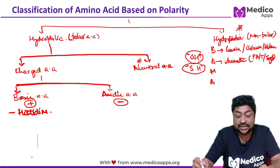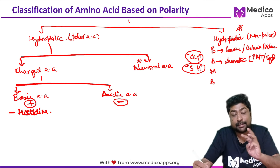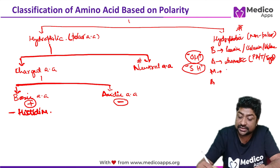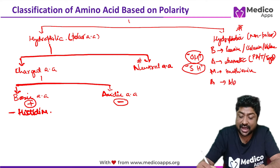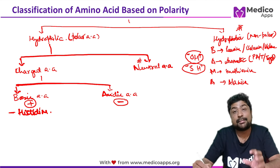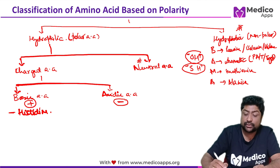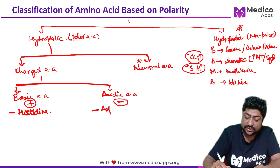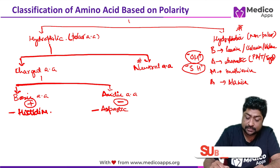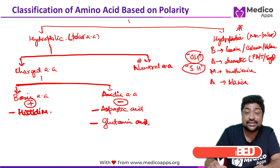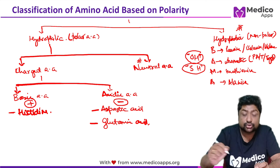Apart from histidine, the three aromatic amino acids — phenylalanine, tyrosine, and tryptophan — are hydrophobic. M in BAMAHO is methionine and the final A is alanine. All the BAMAHO group amino acids are hydrophobic. For acidic amino acids, there are two: aspartic acid and glutamic acid.